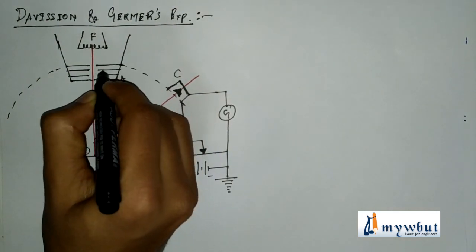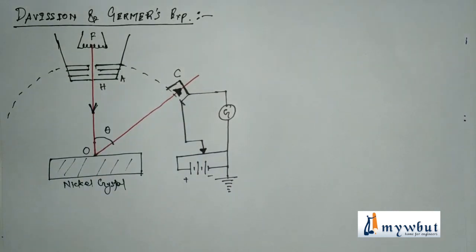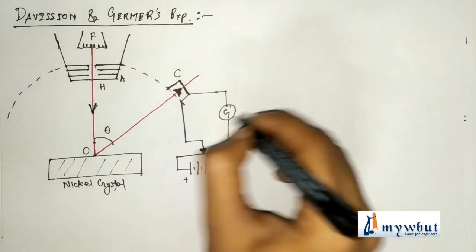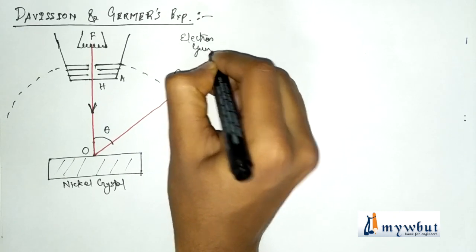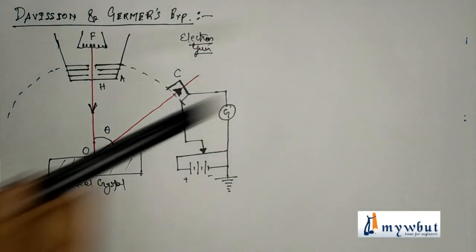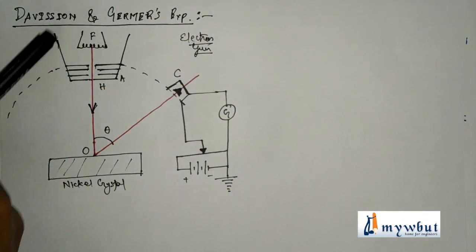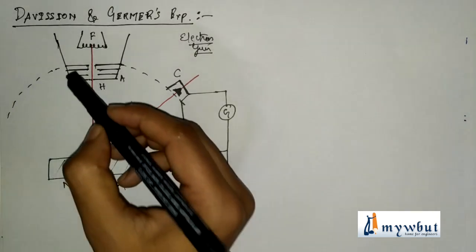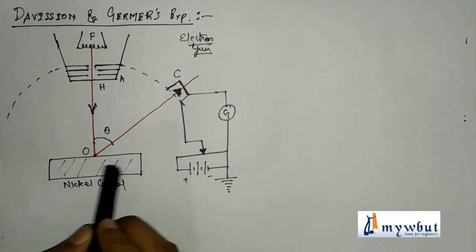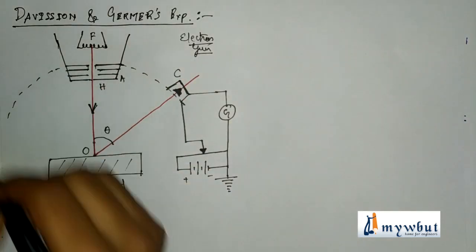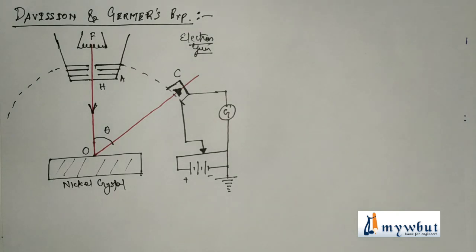The electrons pass through a system of narrow slits and emerge through a fine hole in the anode. This whole arrangement is known as an electron gun. The apparatus is enclosed in an evacuated chamber. The fine beam of electrons strikes the nickel crystal at 90 degrees, and the atoms in the parallel atomic planes scatter the electrons in all directions, producing constructive interference of electron waves.